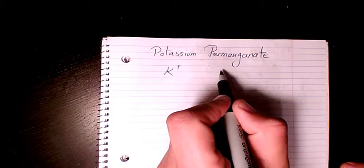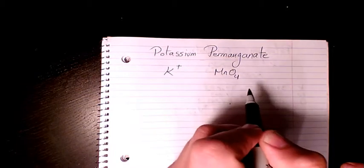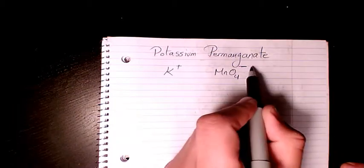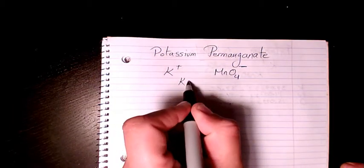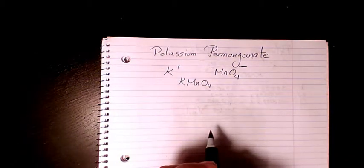polyatomic ion and the formula for that is MnO4, which is negative 1. The charge is negative 1. So when you combine them it's KMnO4. Now if you want to find the molar mass, you need to list all